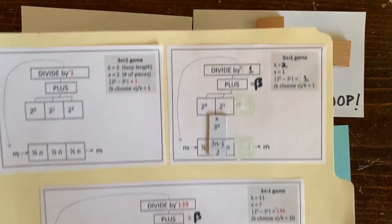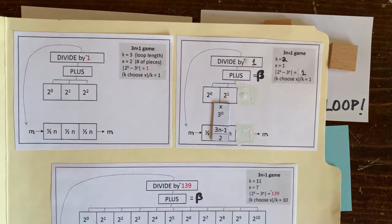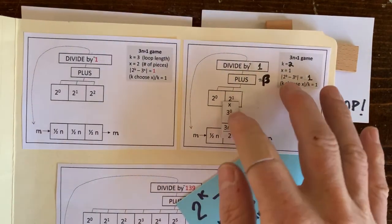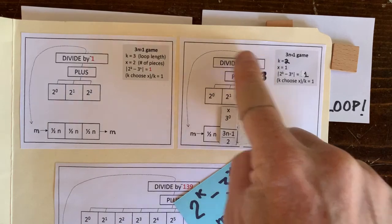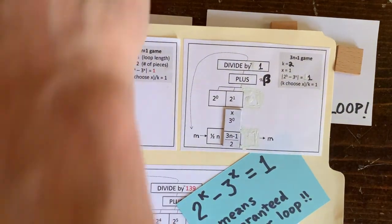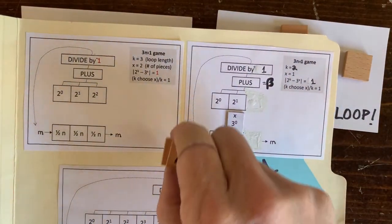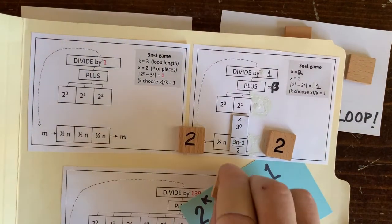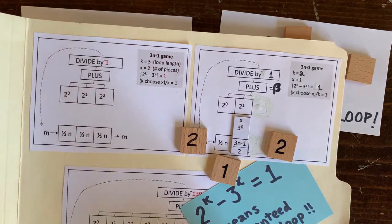So here's the 3n plus 1 computer for k equals 2 x equals 1. It doesn't matter where we put the piece because any beta we get out is going to be divisible by 1. So we're guaranteed to have an integer loop. And so the fact that 2 to the k minus 3 to the x equals 1 here is directly responsible for our old friend, the 2, 1, 2, 1 loop.